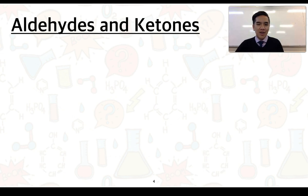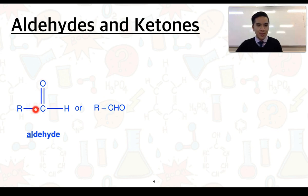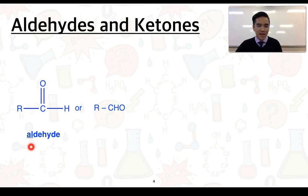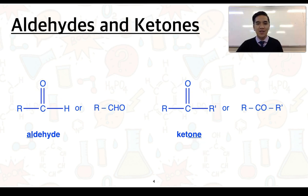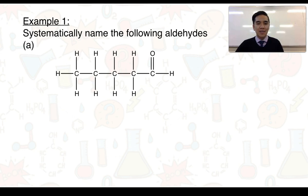Let's now look at the structure of aldehydes and ketones by considering their general formulas. An aldehyde has a terminal carbonyl group at the end of the molecule — a carbon-to-oxygen double bond plus a carbon-to-hydrogen bond, which can be condensed into the CHO form. The suffix used to name aldehydes ends in '-al'. Ketones still have a carbonyl group, but it exists somewhere within the chain, with carbons to the left and right. The suffix used to name ketones ends in '-one'.